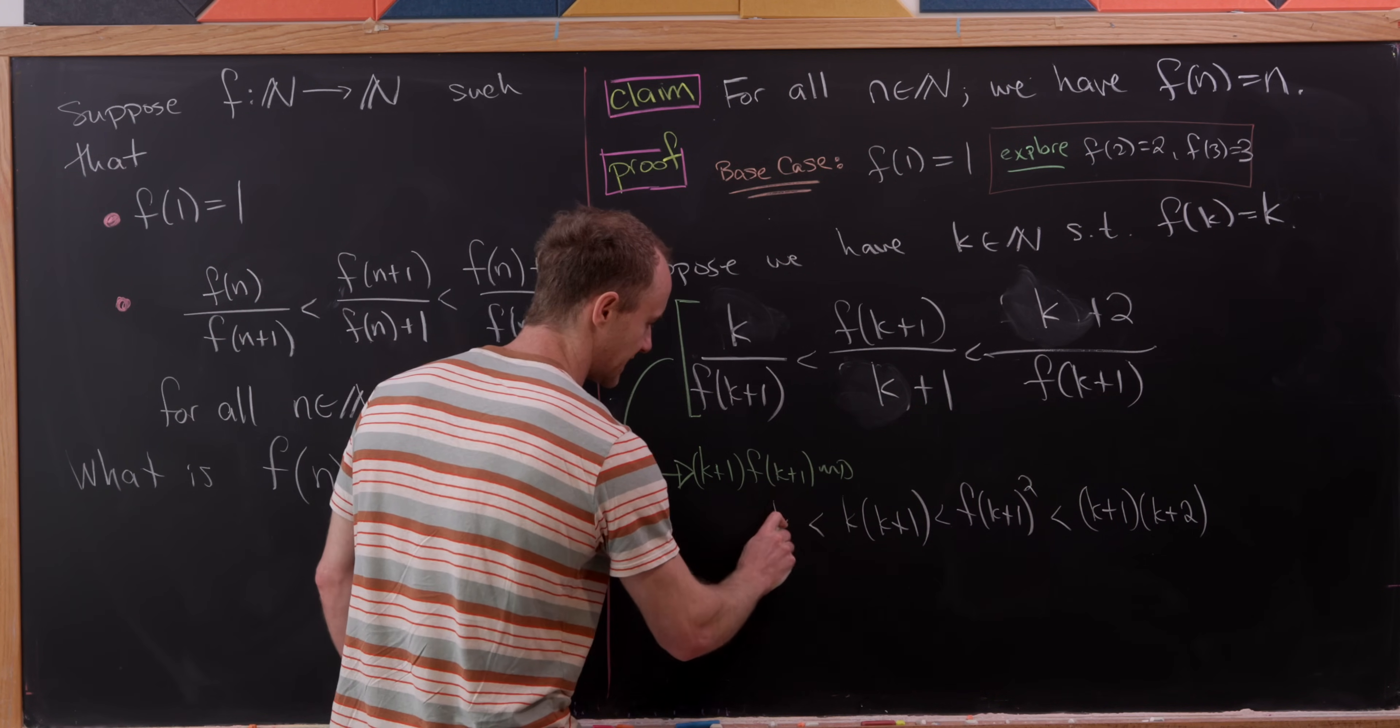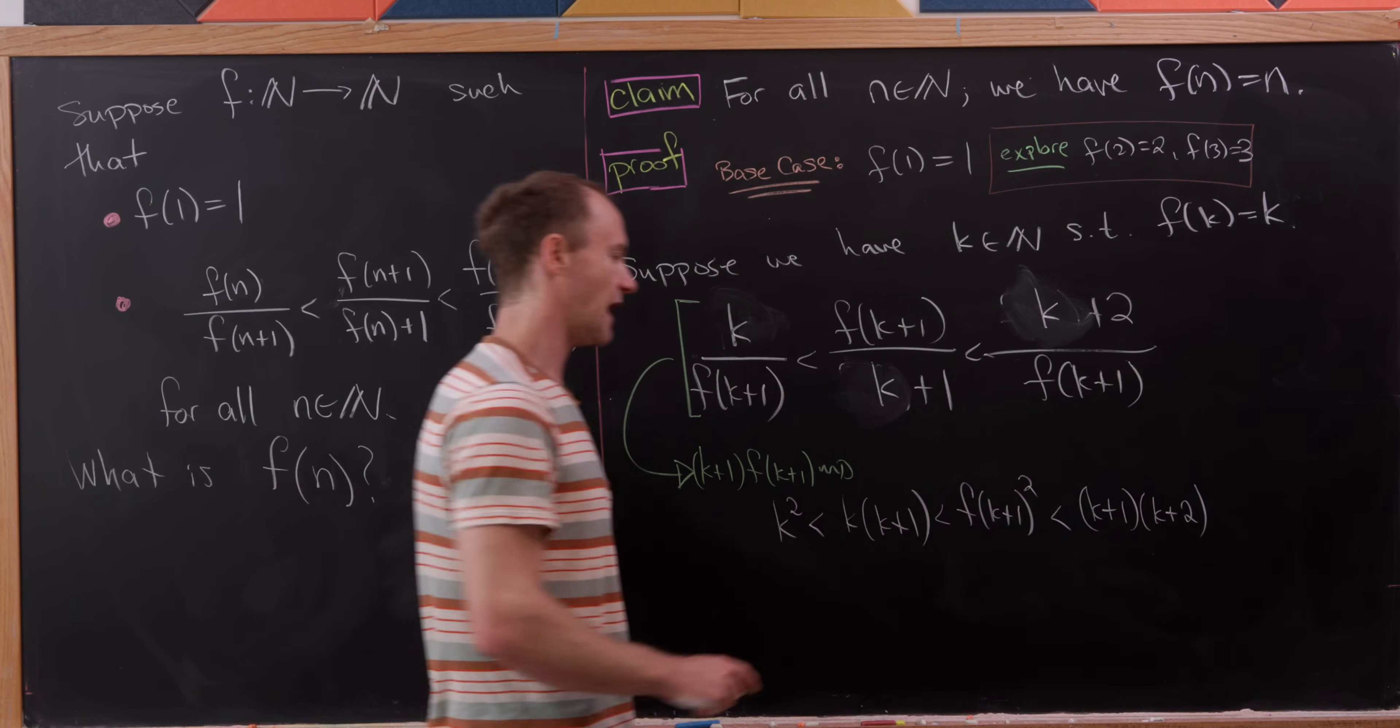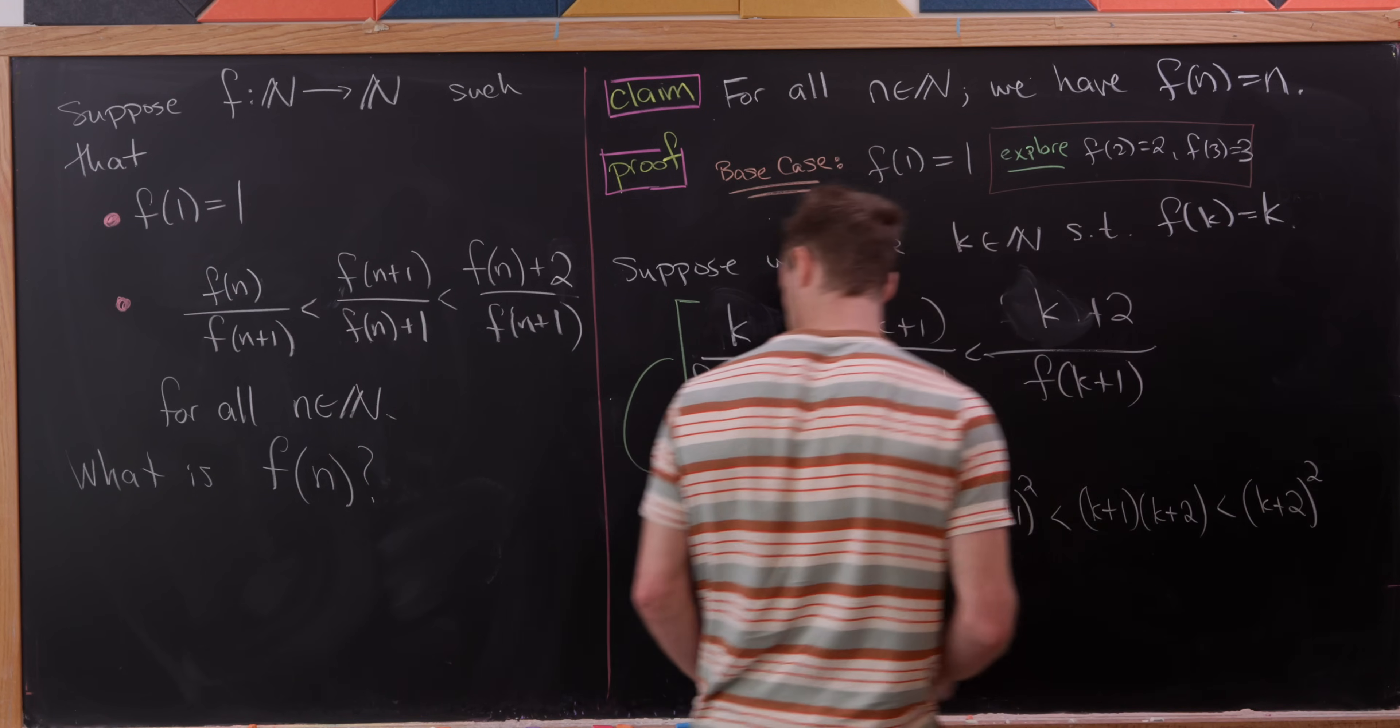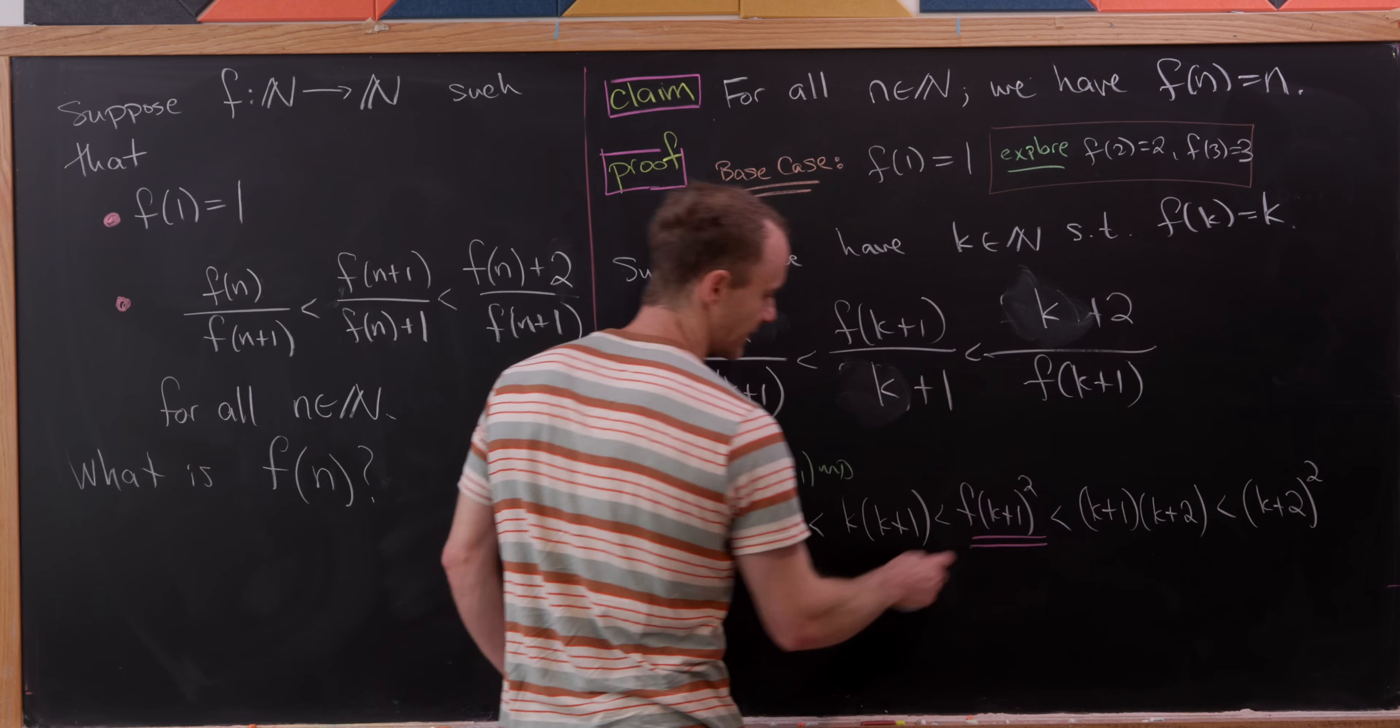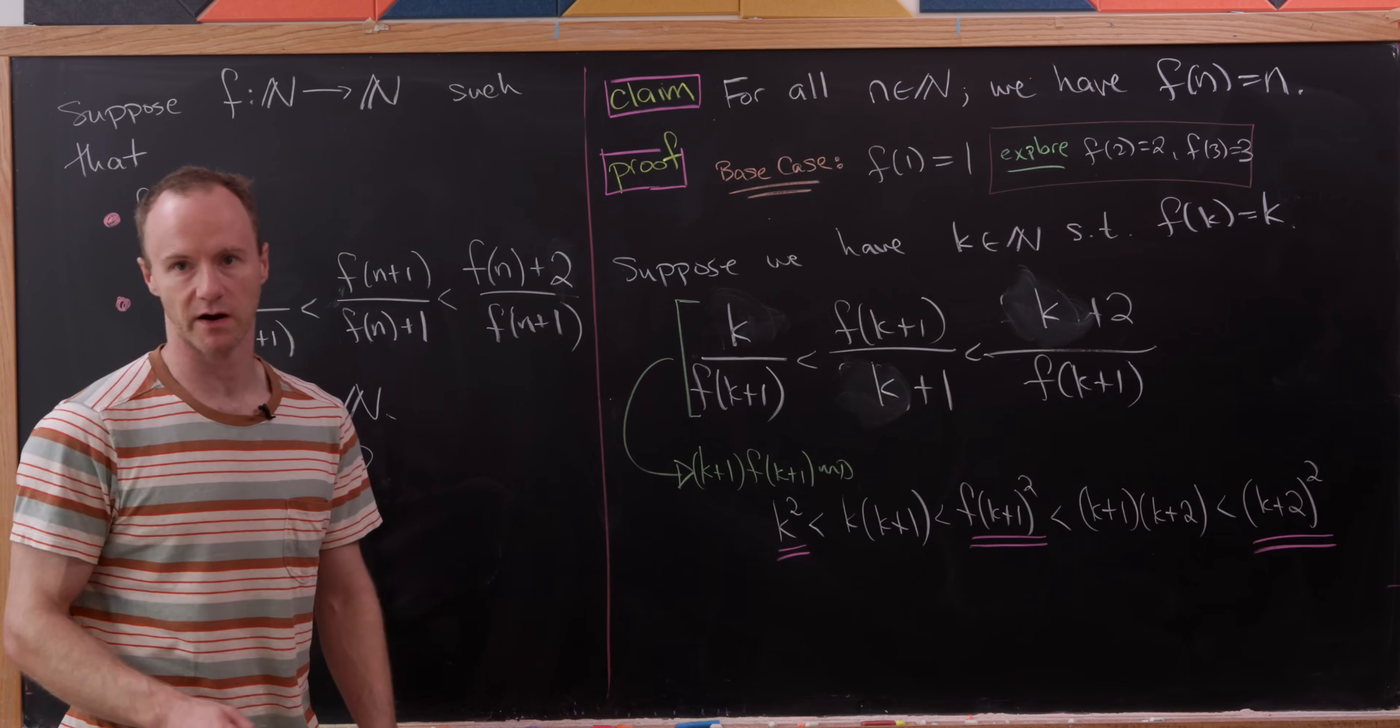Over here we see that k times k plus one, well that's pretty clearly bigger than k squared. And then this k plus one times k plus two, that's pretty clearly smaller than k plus two squared. So we know our number f of k plus one squared is strictly between k squared and k plus two squared.